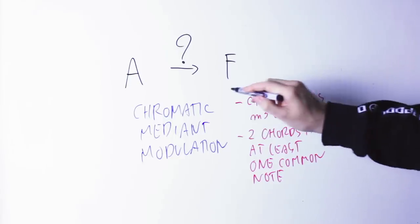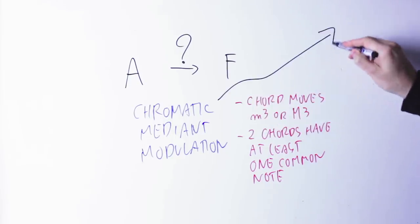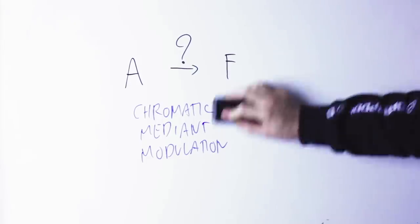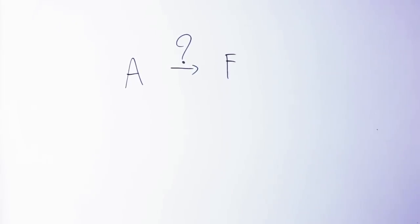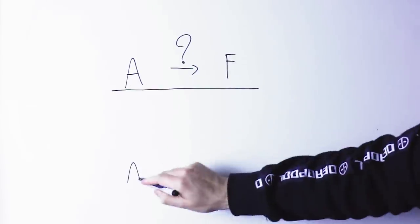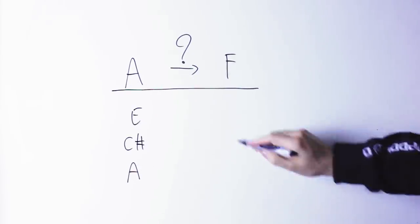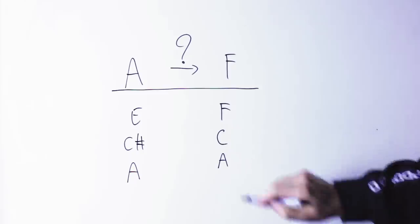Incidentally, I do have a video on chromatic mediant modulations and you can find it by clicking on the link on the top right. So here I'm moving between the A chord to the F chord. The A chord has notes A, C sharp, and E. The F chord has notes F, C, and A.